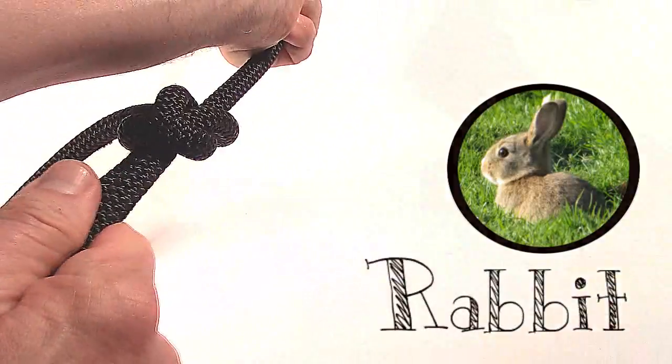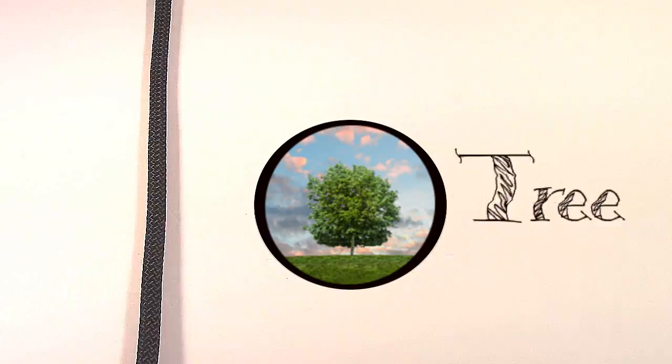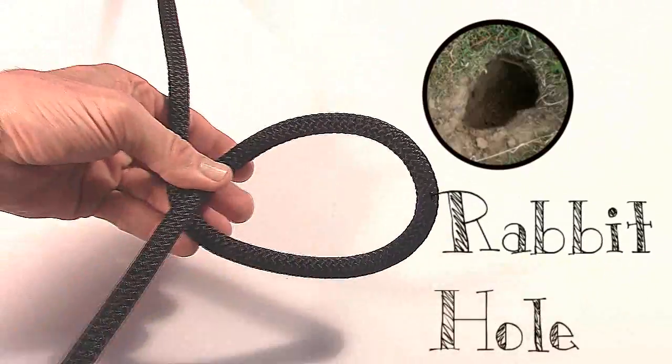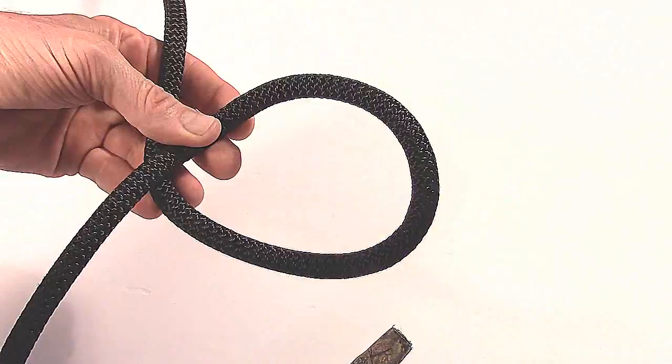The story of the rabbit and the tree. Think of your standing line as a tree. Create a loop as a rabbit hole. The bottom of your standing line is a rabbit.